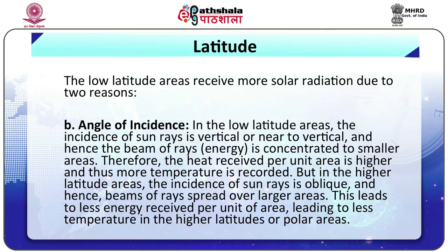Second, angle of incidence: in low latitude areas, the incidence of sun rays is vertical or near to vertical, and hence the beam of rays — that is, energy coming from the sun — is concentrated to a smaller area. Therefore, the heat received per unit area is higher and thus more temperature is recorded. But in higher latitude areas, the incidence of sun rays is oblique and hence beams of rays spread over larger areas. This leads to less energy received per unit area, leading to less temperature in the higher latitudes or polar areas.